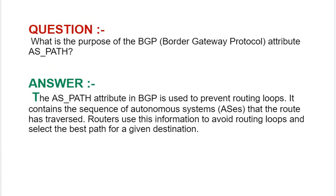Next interview question: What is the purpose of the BGP Border Gateway Protocol attribute AS_PATH? Answer: The AS_PATH attribute in BGP is used to prevent routing loops. It contains the sequence of autonomous systems that the route has traversed. Routers use this information to avoid routing loops and select the best path for a given destination.